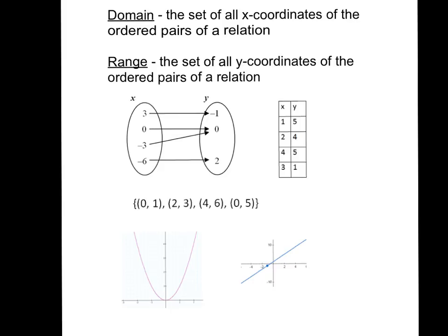If we were to look at the table, for example, we would see the points (1, 5), (2, 4), (4, 5), and (3, 1).